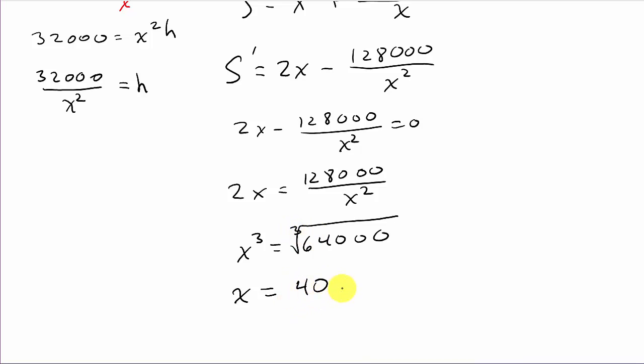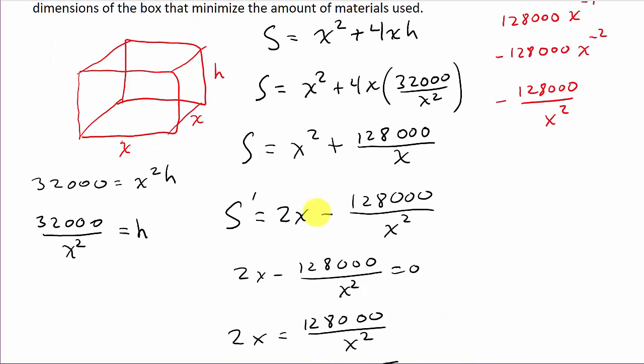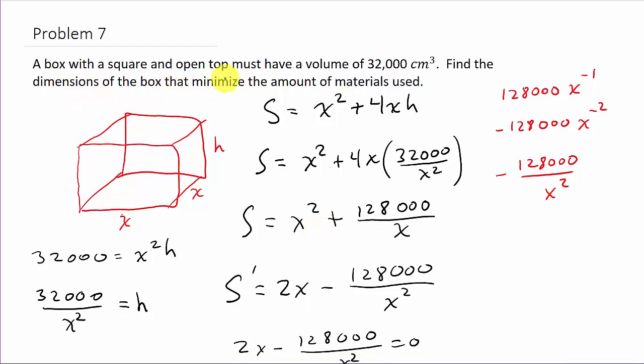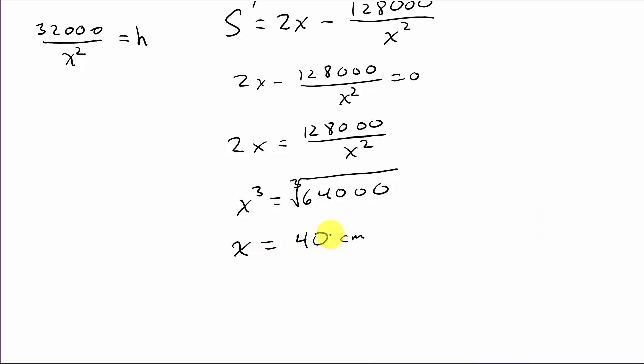That's X. What do they want to know? They want the dimensions of the box. There's X, and now we need the height H. H equals 32,000 over 40 squared, so H comes out to be 20 centimeters. The dimensions are 40 by 40 by 20.